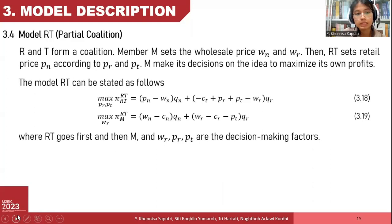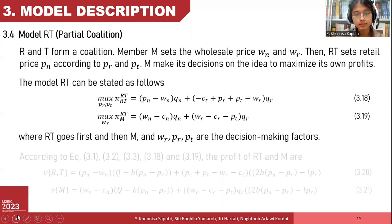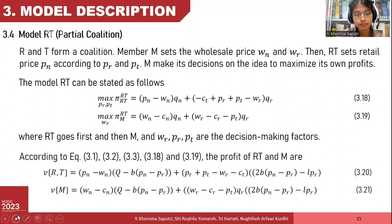The last partial coalition model is the coalition between the retailer and the third party. Shown on screen is the Shapley value of this model.